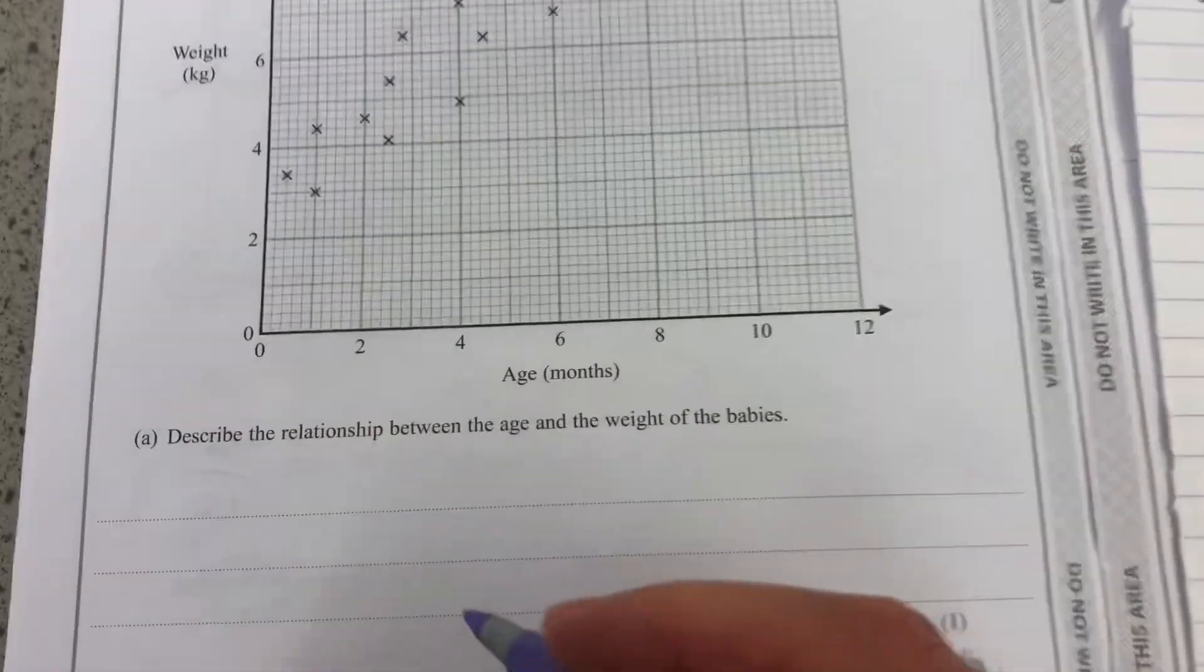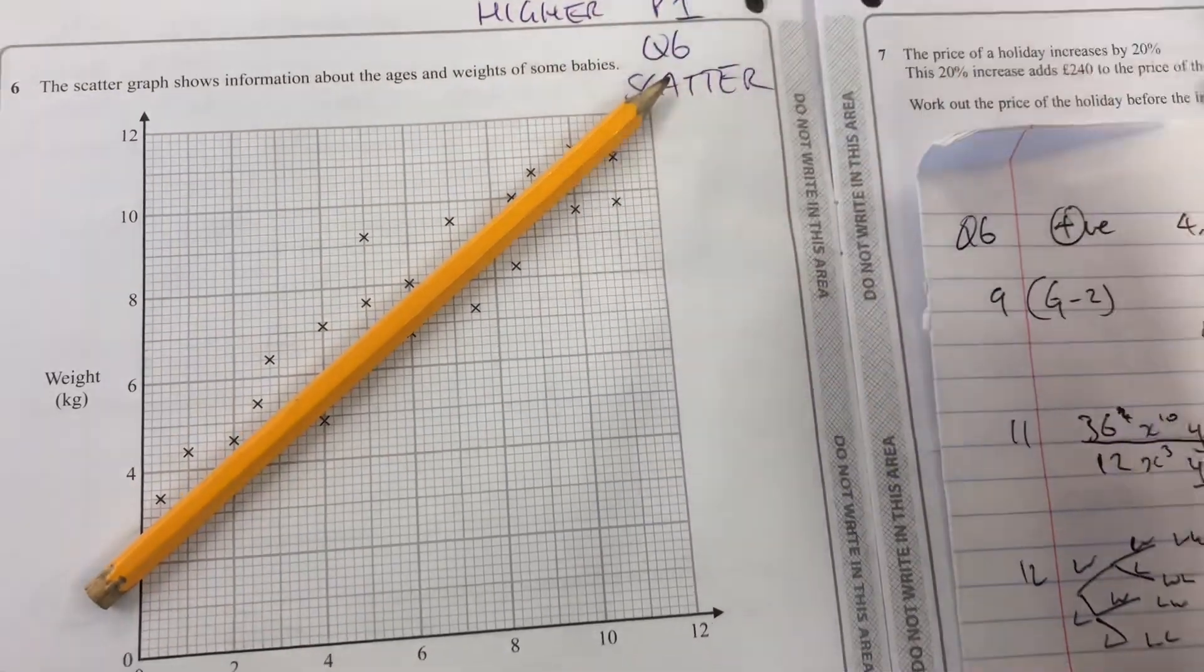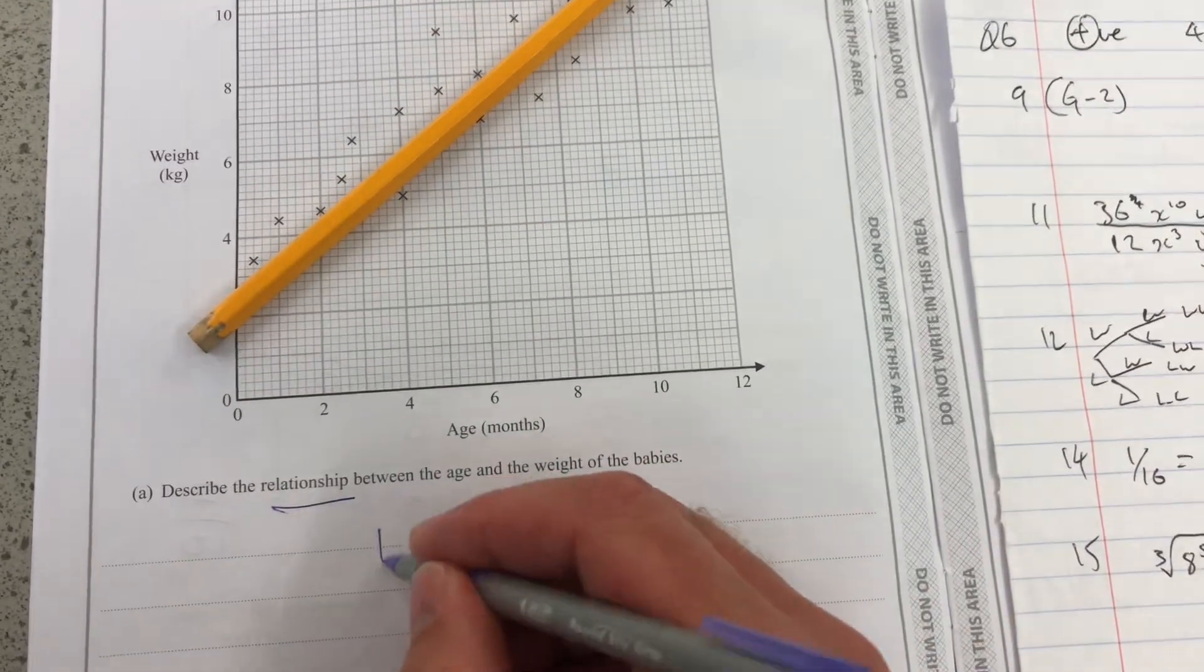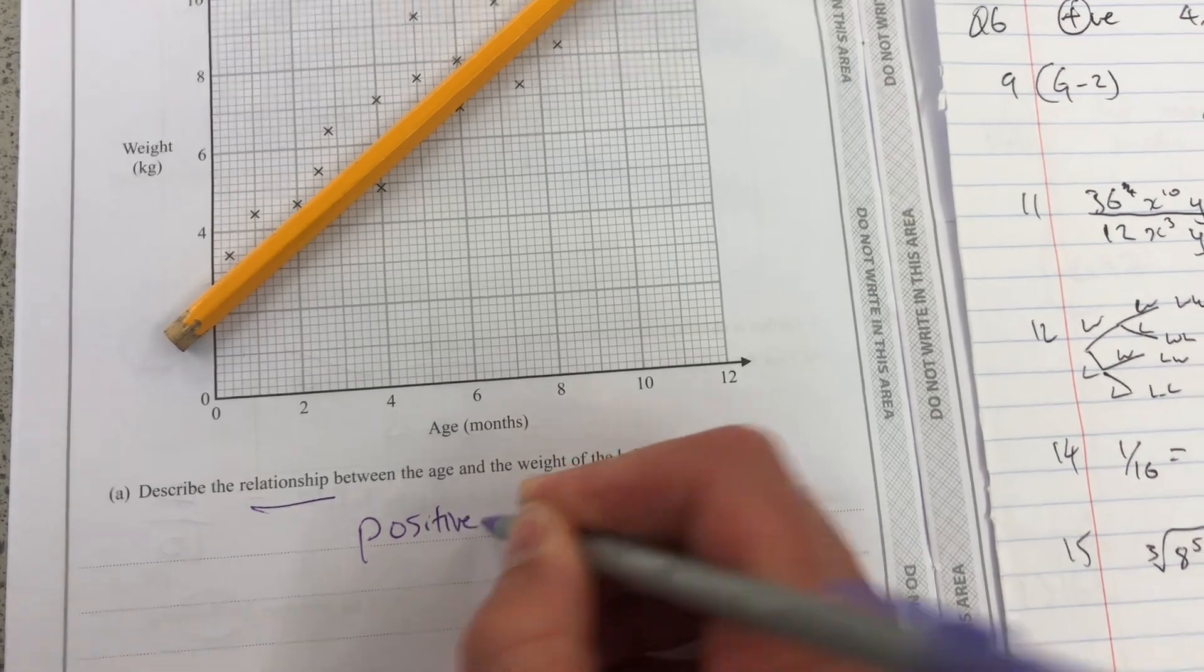Okay, the first question is to describe the relationship. We can see that everything's roughly going up, so it's a positive relationship.